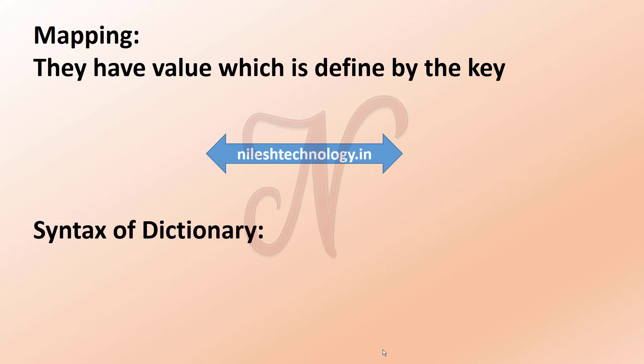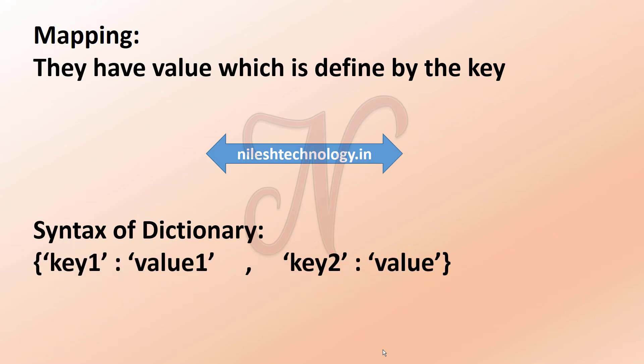A Python dictionary consists of a key and an associated value. The syntax is key colon value, separated by commas, and all items are enclosed in curly brackets. Remember that lists are enclosed in square brackets, while dictionaries are enclosed in curly brackets.